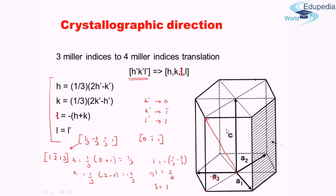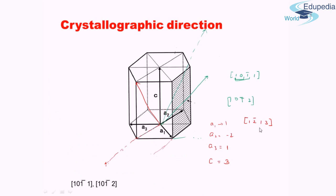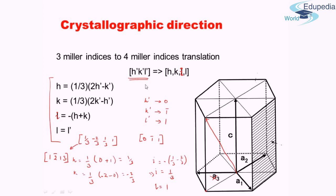So when it's difficult to find the exact values directly in the four-index system, translate the problem by first finding the three-index system Miller indices and then converting using the formula. This concludes our discussion of crystallographic directions for the hexagonal system. In the next lecture we'll start discussing crystallographic planes and how to find Miller indices for planes. Have a great day — goodbye!